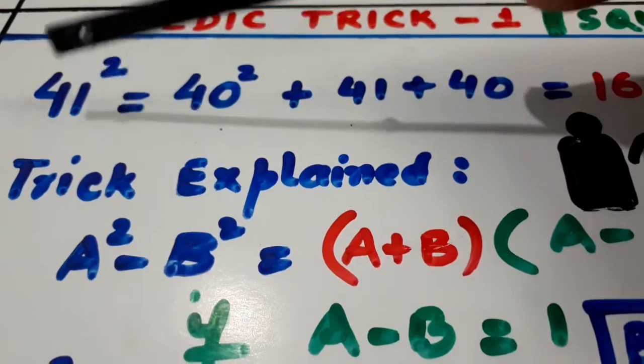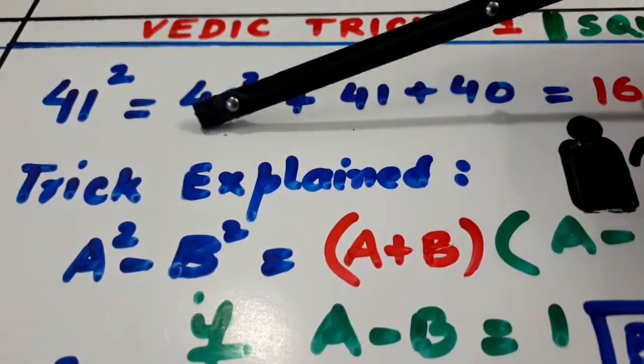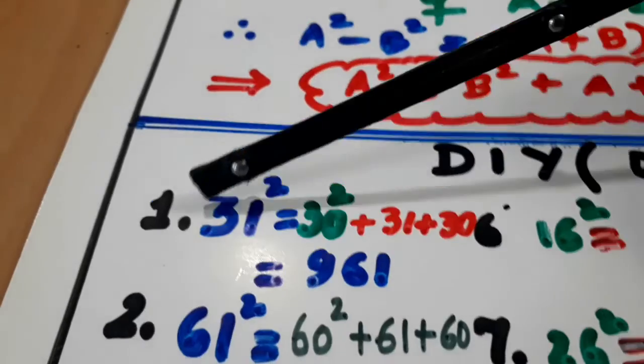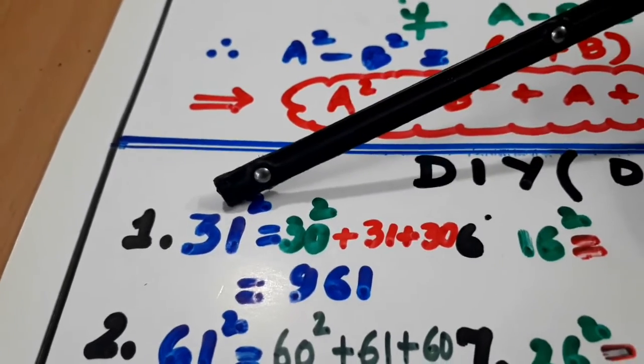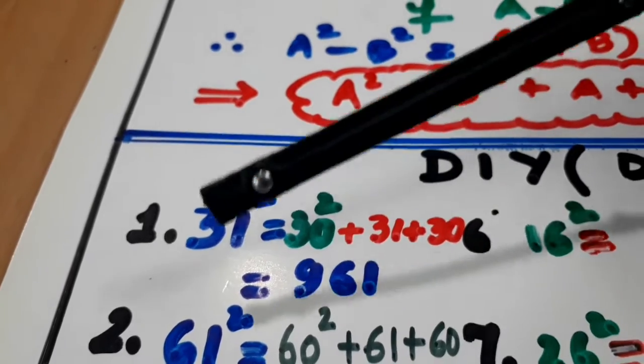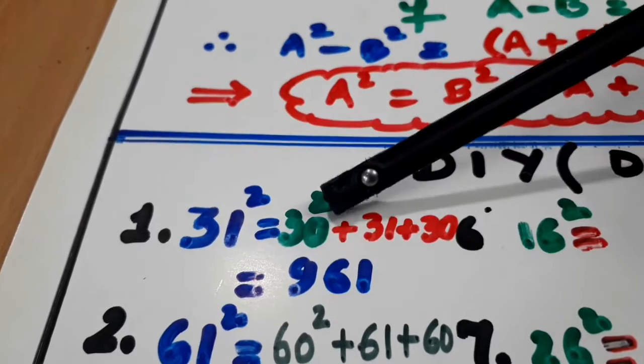Jiska bhi square likha hua hai, usse ek kam kar do. Phir yehi dono number 41 or 40 yaan likh do. Same way. 31 ka square. Ek kam karo. 30 ka square. 31 or 30 yaan likh do. So 30 ka square.